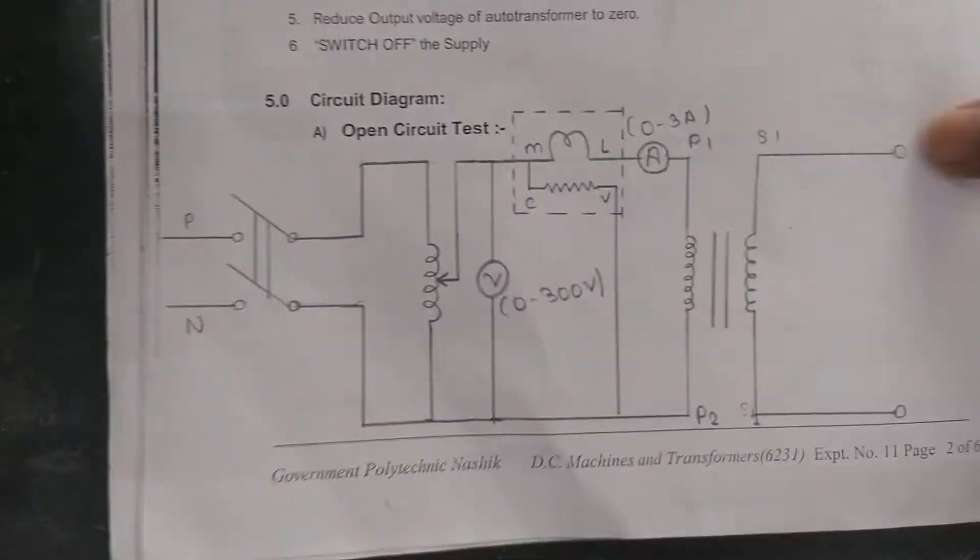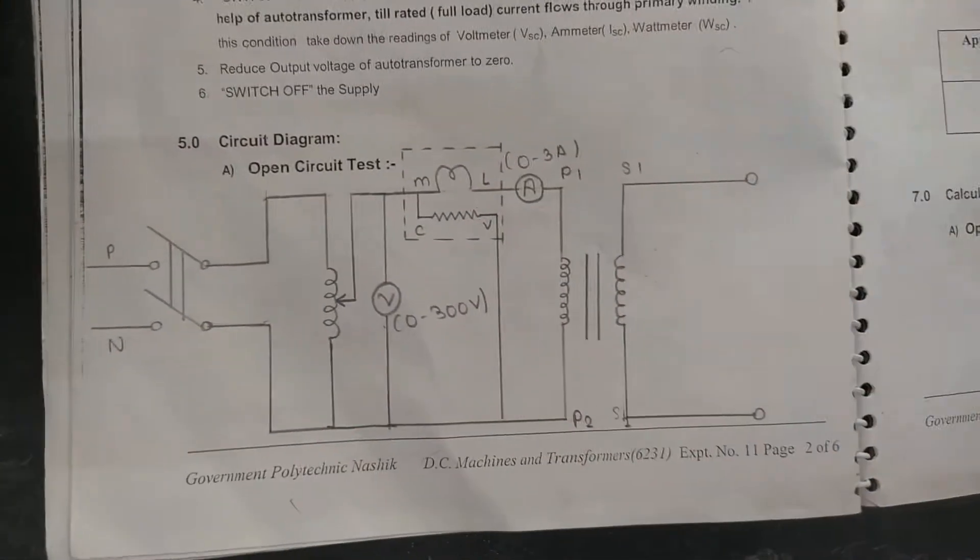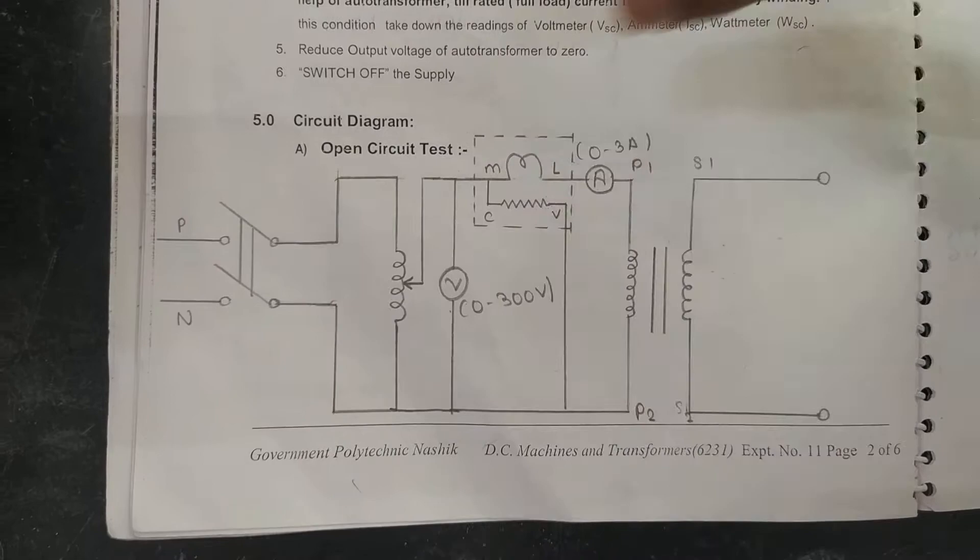So this is diagram for open circuit, here the secondary is kept open, and across primary we are connecting watt meter and ammeter.